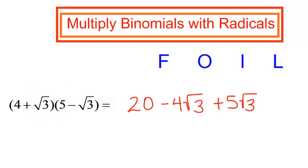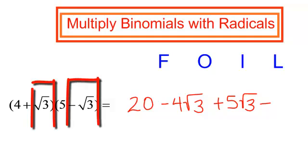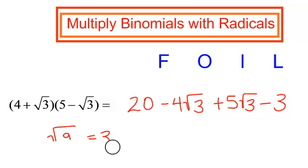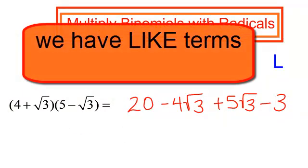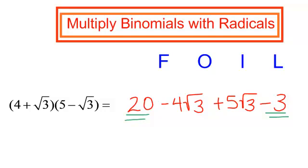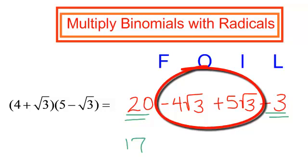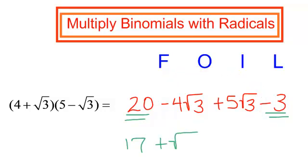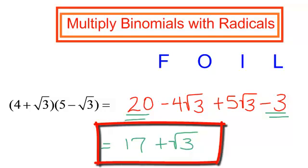And the last term: a positive times a negative would be a negative. Now watch this — radical 3 times radical 3 is radical 9, but radical 9 is just 3. The radical is gone. Now do I have any like terms? I do have like terms here — I told you this would get more exciting. 20 minus 3 will be 17. Negative 4 radical 3 and positive 5 radical 3 will be positive 1 radical 3, though I'm not writing the 1 because that is the same thing.